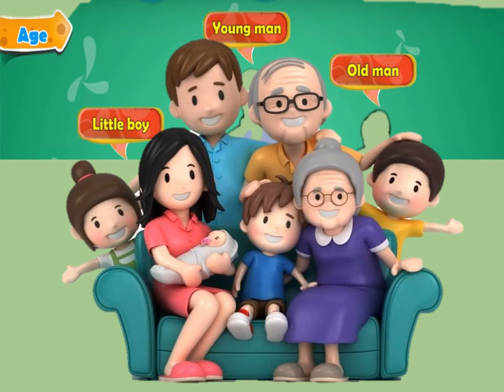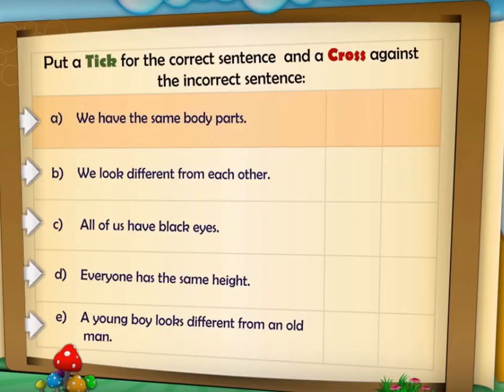Do we all have the same body parts? Yes, we do. Do we look different from each other? Yes, absolutely. Do all of us have black eyes? No, not all of us have black eyes. Does everyone have the same height? No, everyone has a different height. A young boy looks different from an old man. Yes, he does.